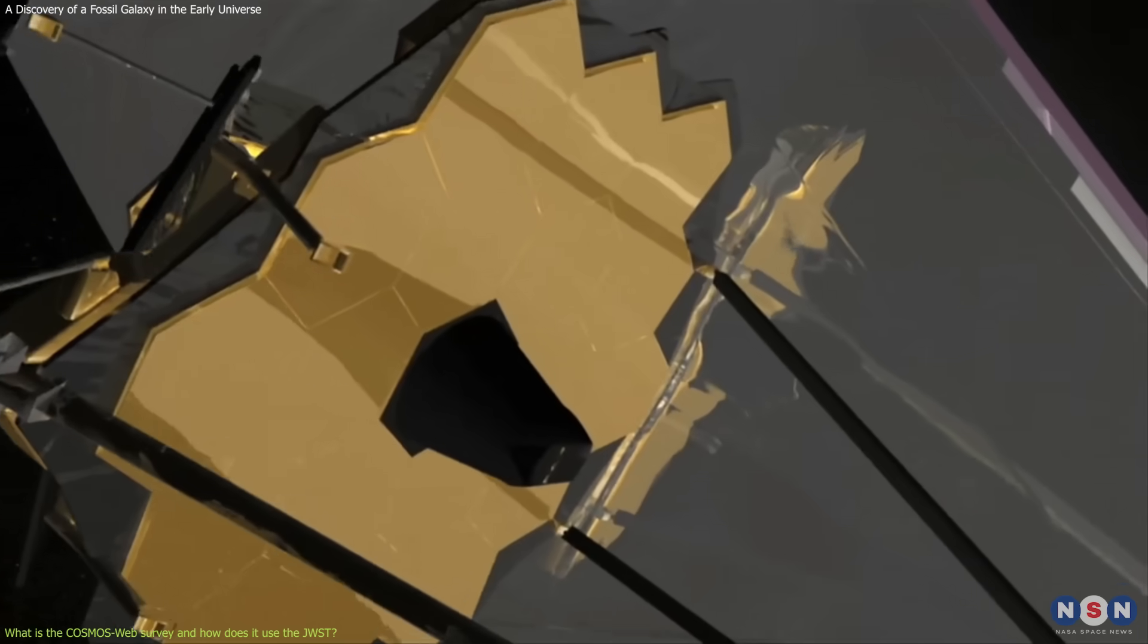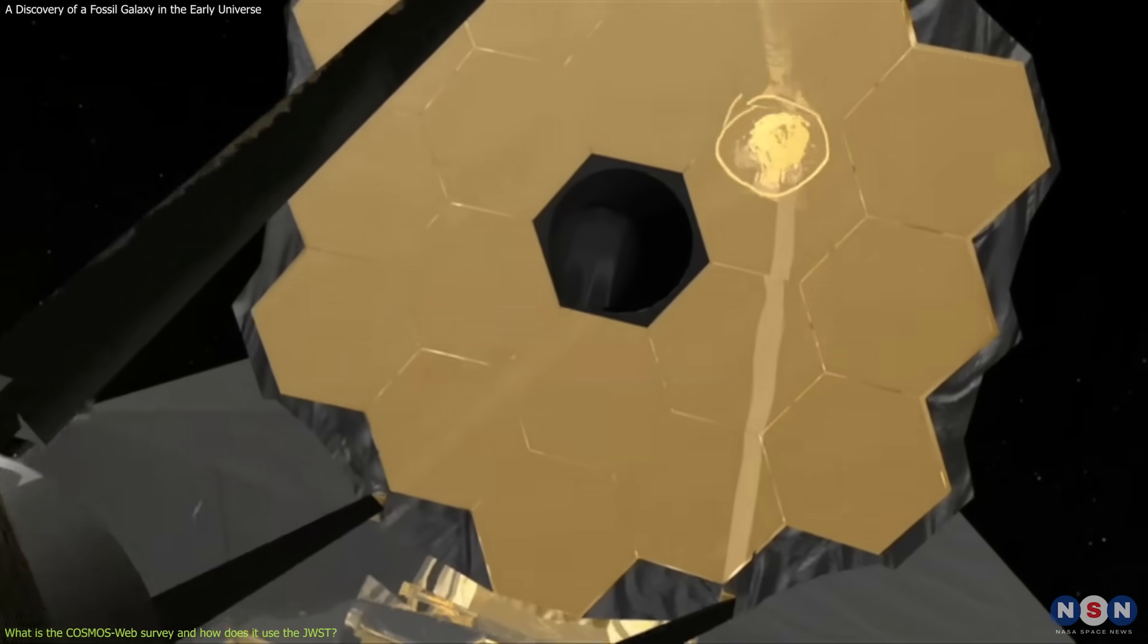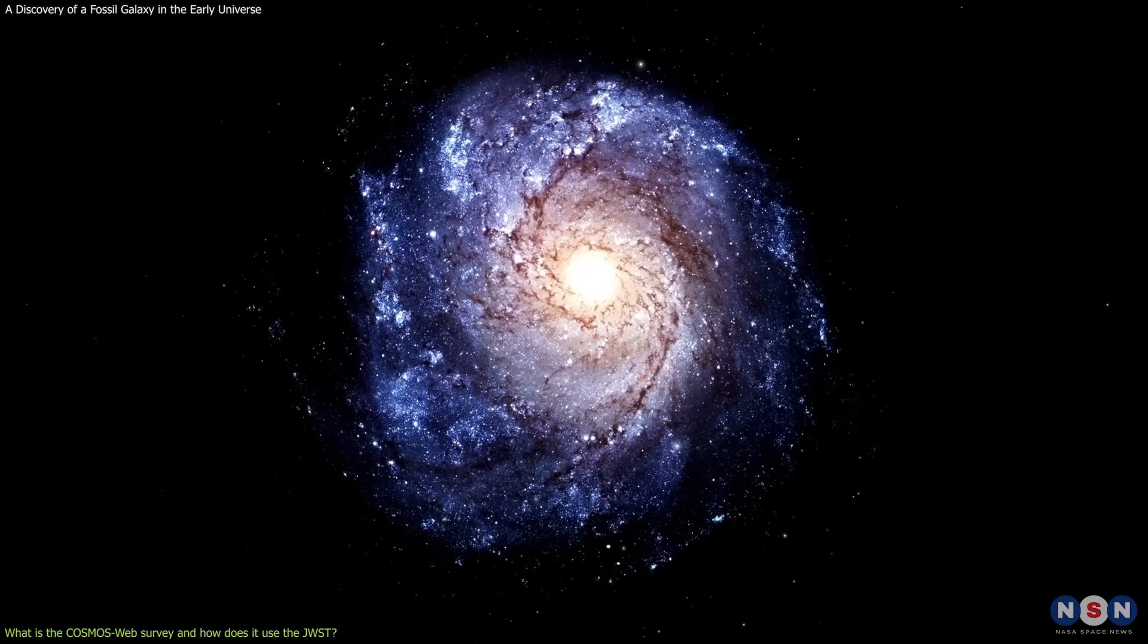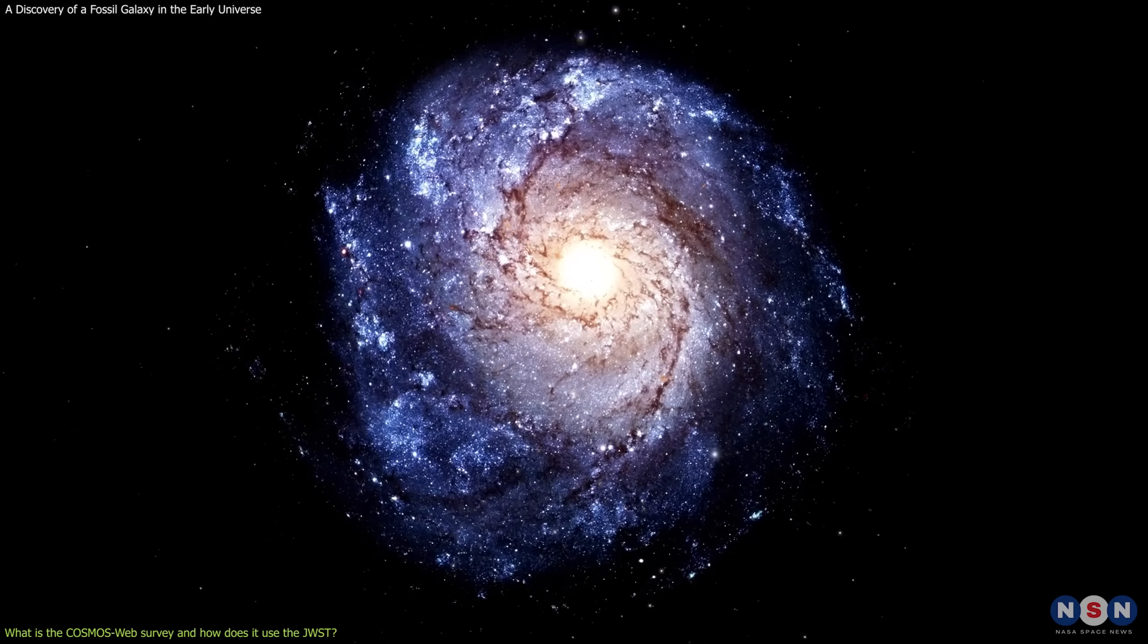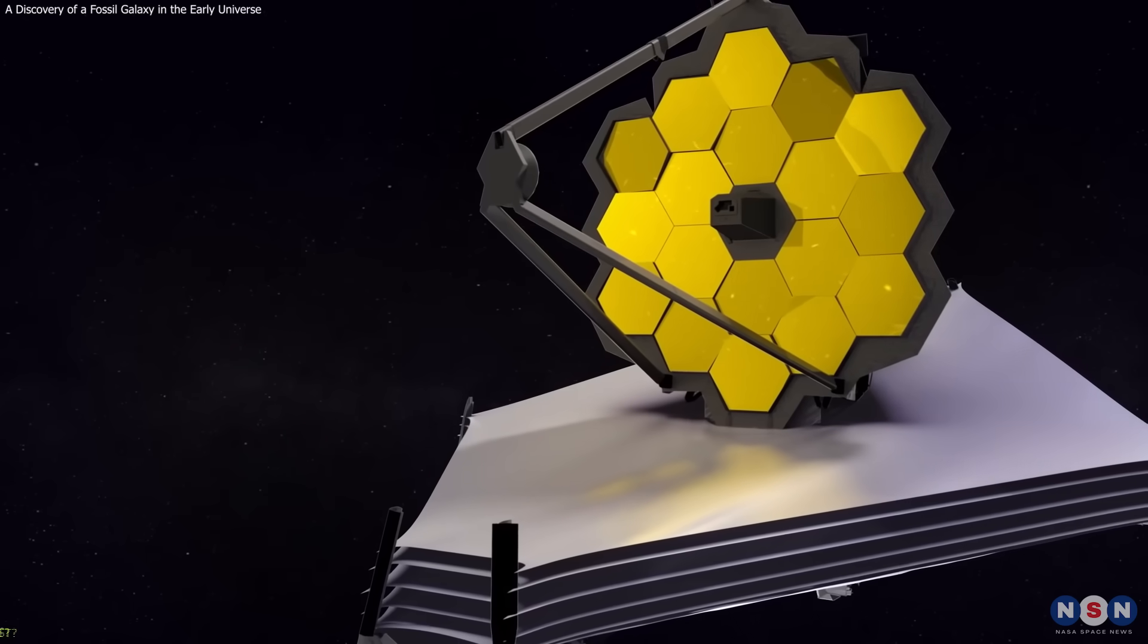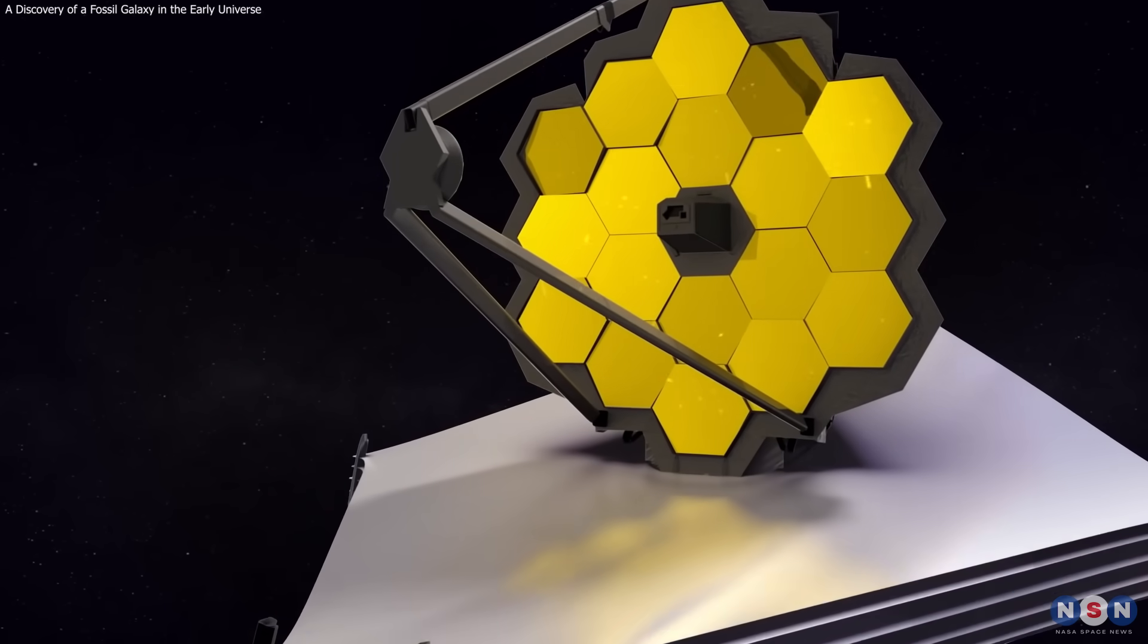The survey is one of the first to use the James Webb, and it has already produced some remarkable results, such as the discovery of the massive and compact quiescent galaxy. But what are the characteristics of this galaxy, and how did Webb measure them? Let's find out in the next section.